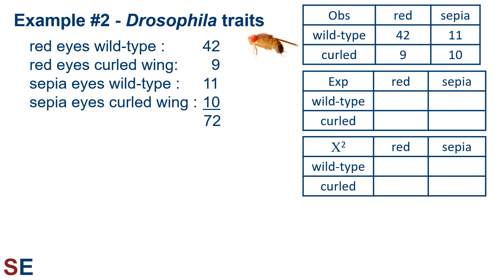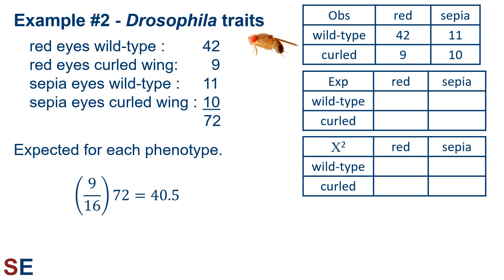As before, we create a set of grids for observed, predicted, and chi-squared contributions. The total offspring is 72. The predicted number of red-eyed wild-type individuals is 9/16 × 72 = 40.5. The predicted number of sepia-eyed wild-type individuals is 3/16 × 72 = 13.5. The predicted number of red-eyed curled wing individuals is 3/16 × 72 = 13.5. Finally, the predicted number of sepia-eyed curled wing individuals is 1/16 × 72 = 4.5.